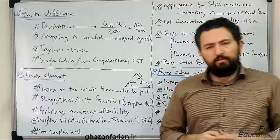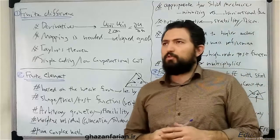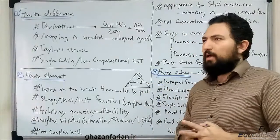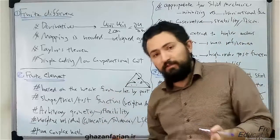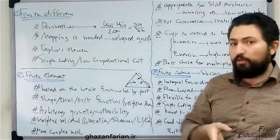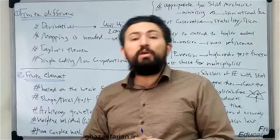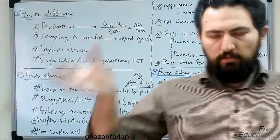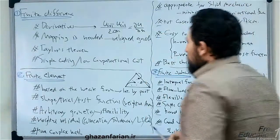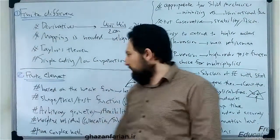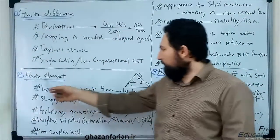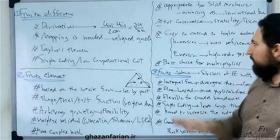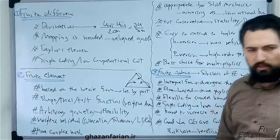In this lecture, I'm going to introduce different characteristics, advantages and disadvantages of three important traditional numerical methods and their applications in different physical problems. The first one is the finite difference method, the second one is the finite element, and the last one is the finite volume. These are three well-known numerical methods.